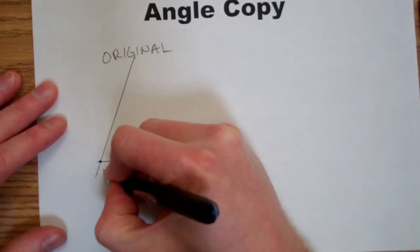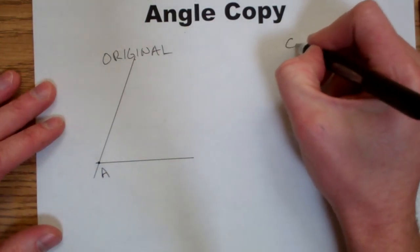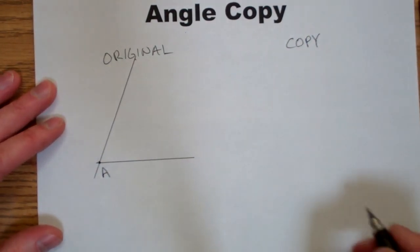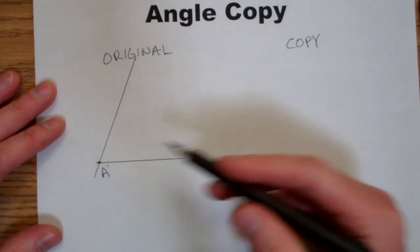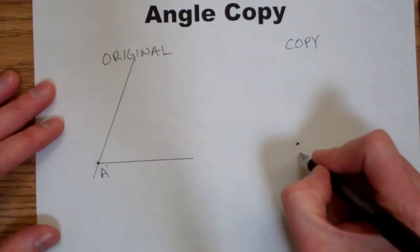I'm going to label the vertex point A. I'm going to start my copy. Copying the vertex is easy. You just pick a point and put it down.